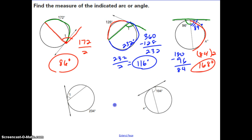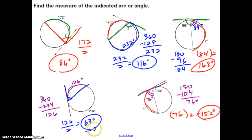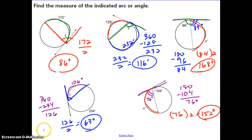Pause and find the measure of angle 1 and the measure of arc x, then check back. Hopefully you found the measure of angle 1 to be 63 degrees and the measure of arc x to be 152 degrees. If not, check your work to see where you made a mistake. That's it for today — I'll see you in class for more practice on inscribed angles.